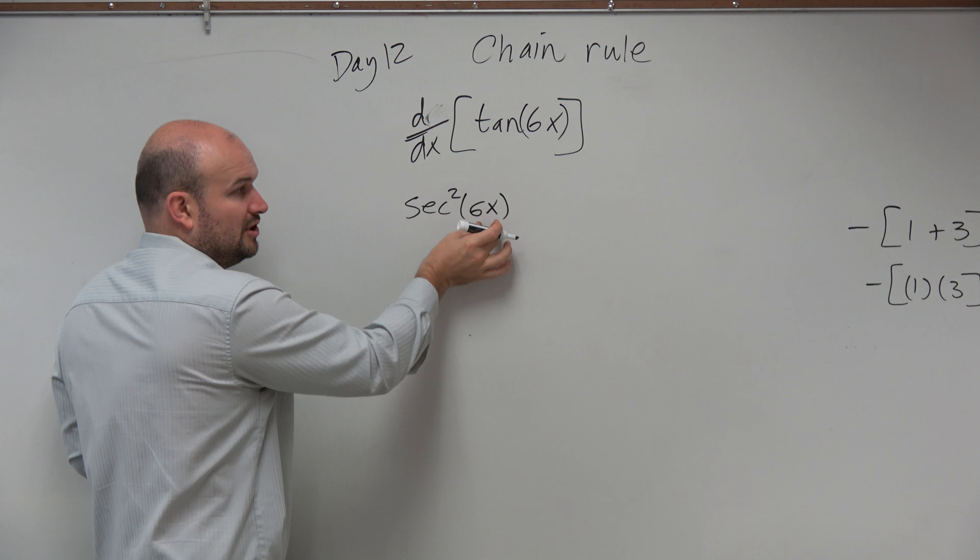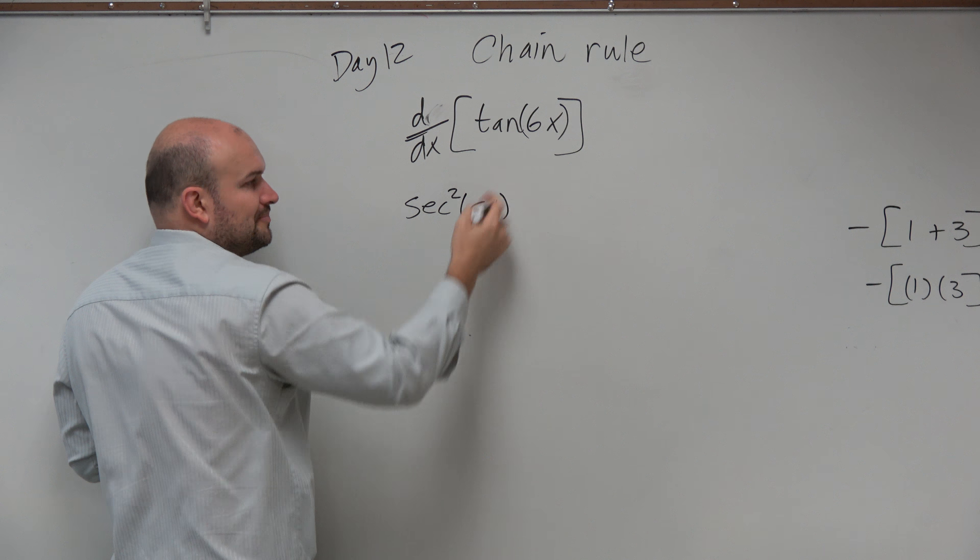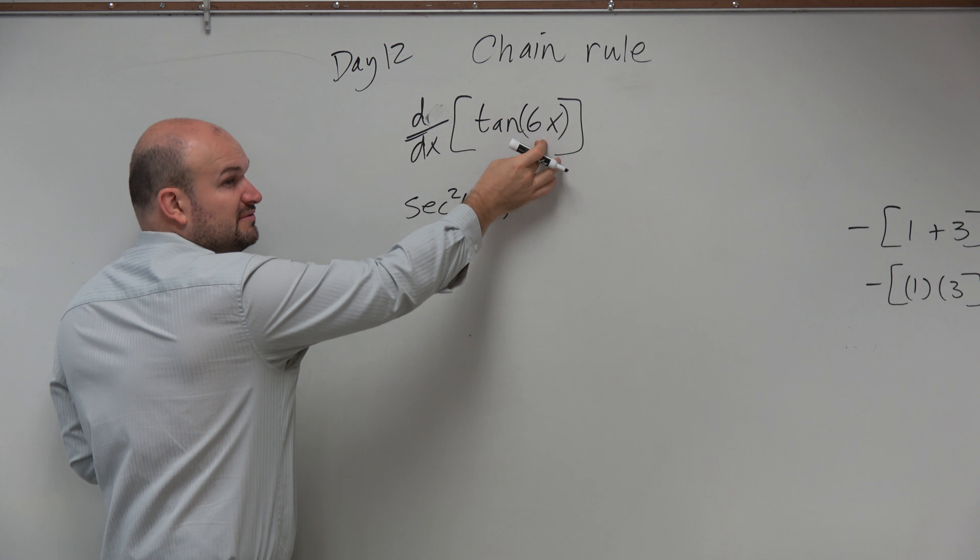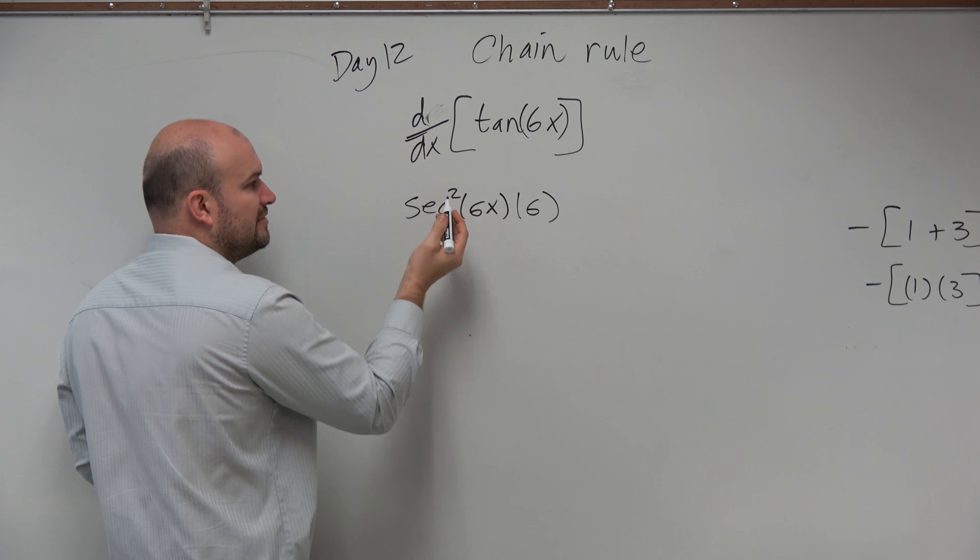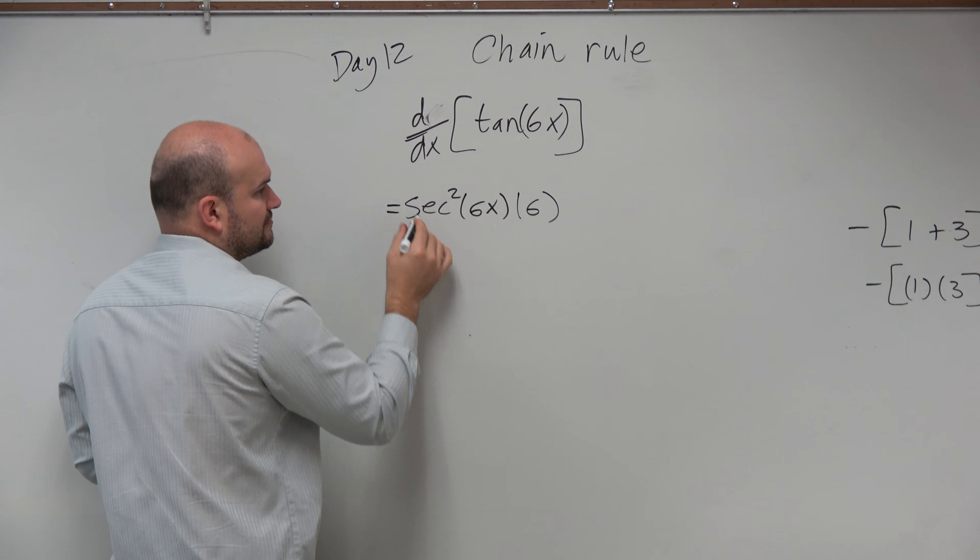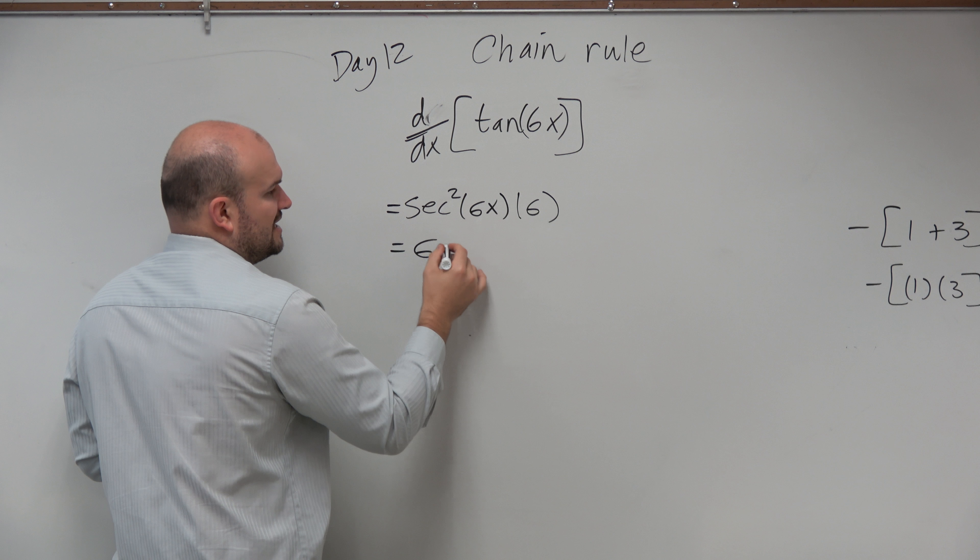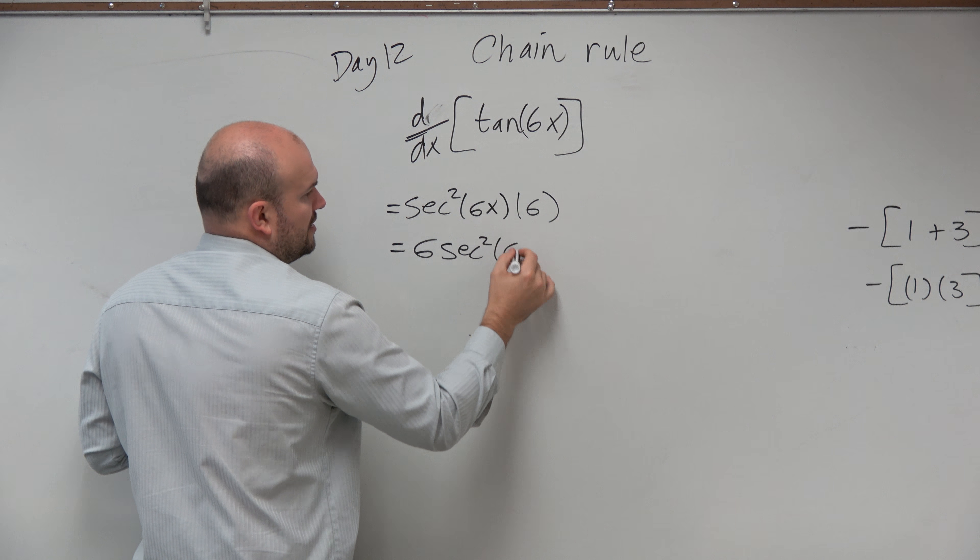Derivative of the outside, plug in g of x, which is my inside function. And then I'm going to multiply that by the derivative of the inside function, which is 6. Which we would rewrite as 6 secant squared of 6x.